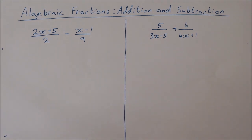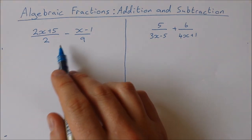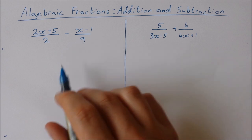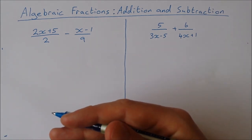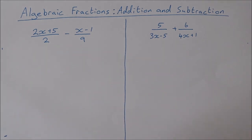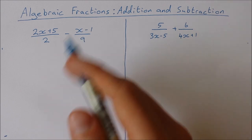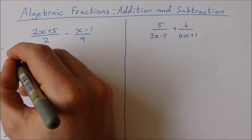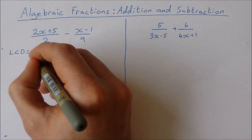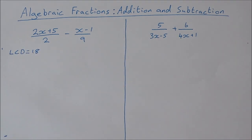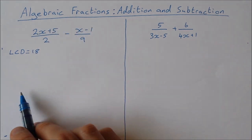The first example is 2x plus 5 over 2 minus x minus 1 over 9. We treat algebraic fractions the same as normal numerical fractions — we need a common denominator in order to add or subtract them. So in this case I'm going to find the lowest common denominator, which is 18. I'm going to rewrite both of these fractions with a denominator of 18.